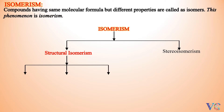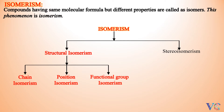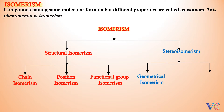There are Chain Isomerism, Position Isomerism, and Functional Group Isomerism. Stereo Isomerism is basically of two types: Geometrical Isomerism and Optical Isomerism.